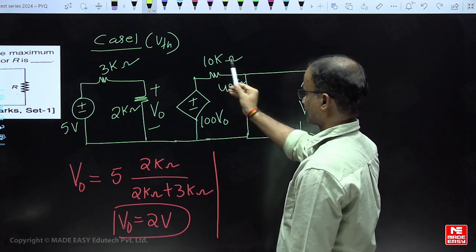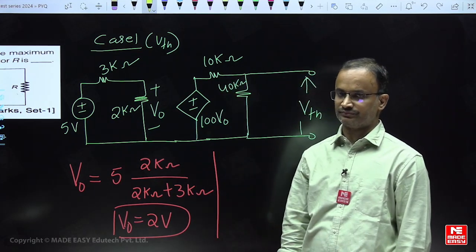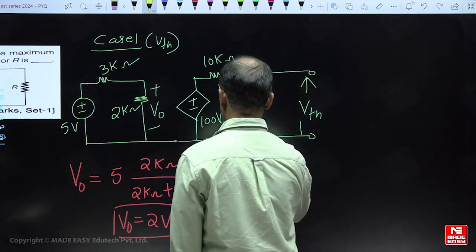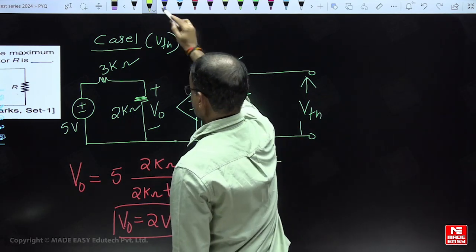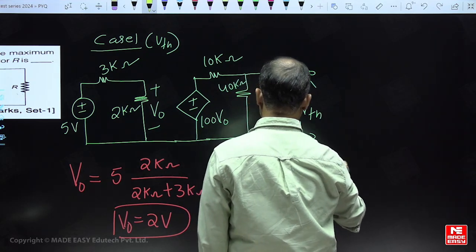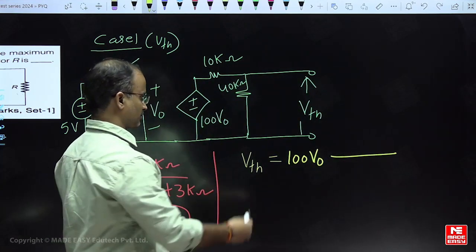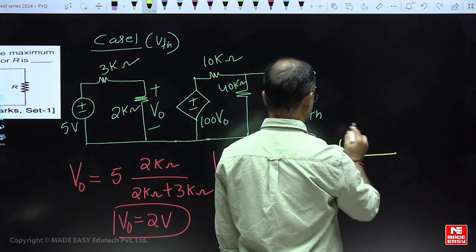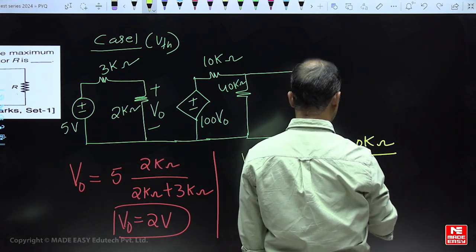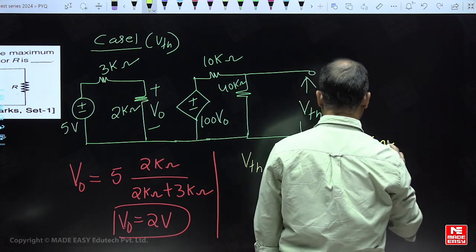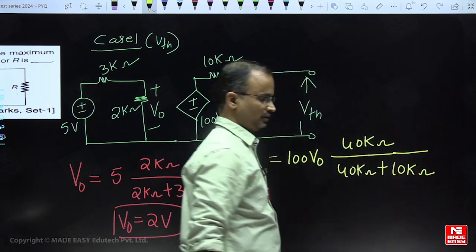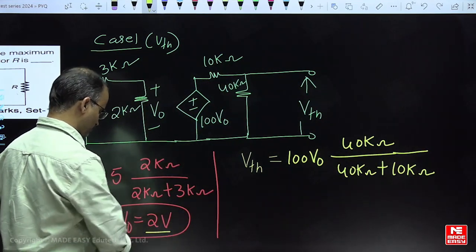The total voltage is distributed between the first element and the second element. To get the voltage across this part, let us apply the voltage division technique again. The Vth evidence equals the total voltage multiplied by the similar resistor, which is 40 kΩ. V_naught is equal to 2 volts.